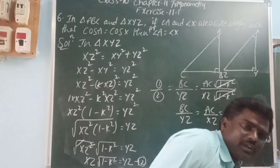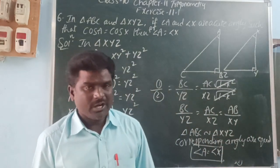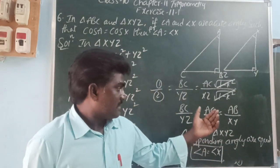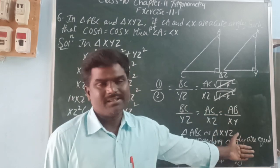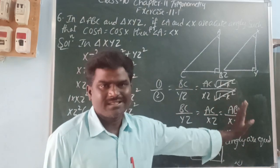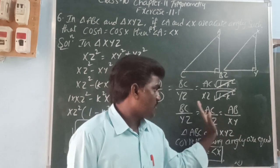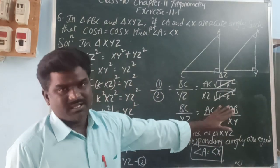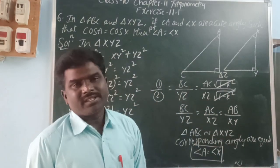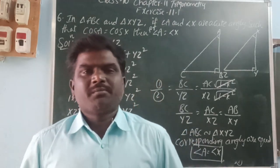So how we proved that the two triangles are similar: by using the Side-Side-Side similarity criterion. We proved the SSS ratios by using Pythagoras theorem. Thank you for watching my videos.